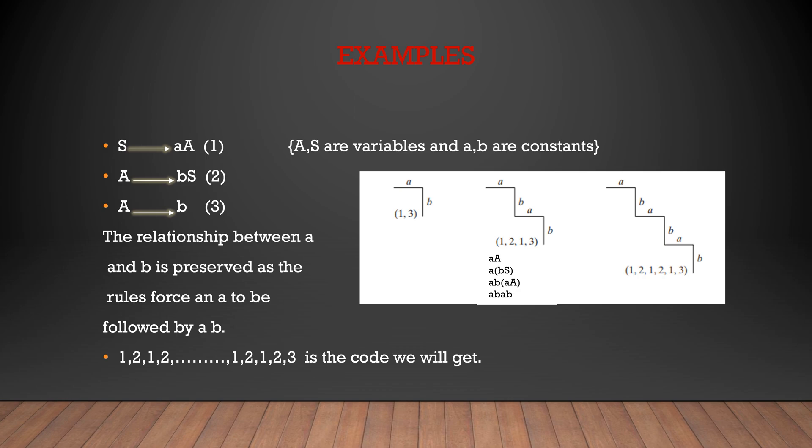The first element is a, so capital S is the first variable. We represent capital S equal to a into capital A. For the next element b, we check whether it is the last element or not — it is not the last element, so we take capital A equal to rule 2: b into S. Instead of capital A, we write b into S. The next element is also not the last element, so instead of A we write S equal to a into capital A, giving us a into b into a into capital A. For the last element b, we use rule 3 and write b. So here we used rule 1, then rule 2, then rule 1, then rule 3 — that is why we got the code 1, 2, 1, 3.